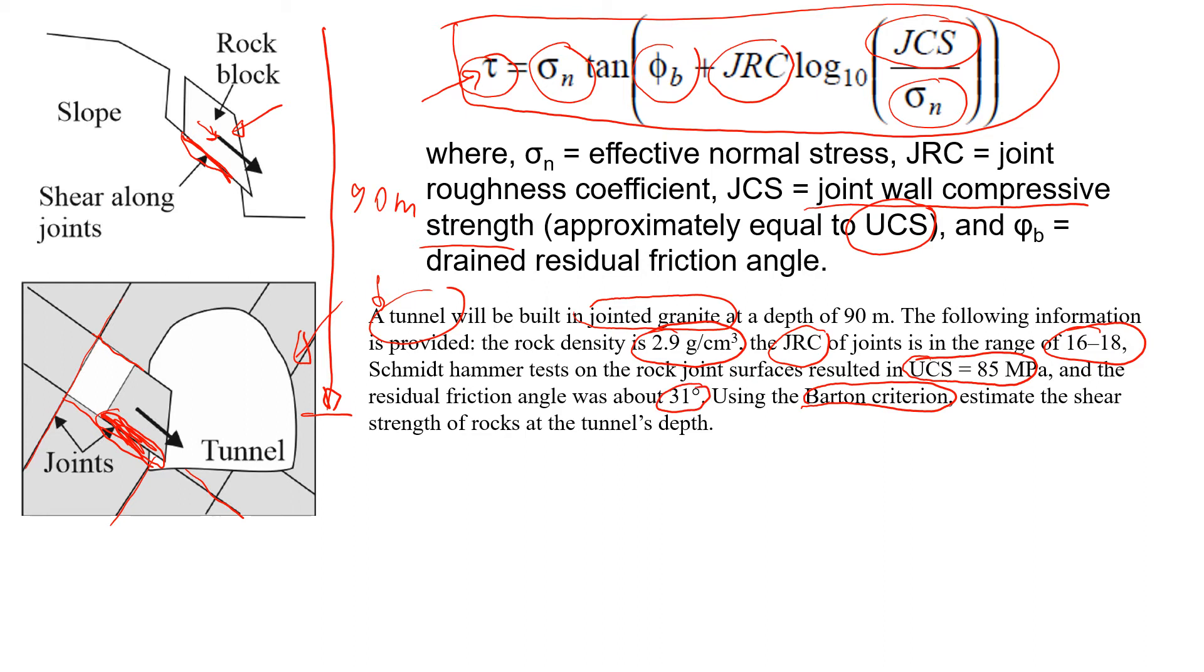So basically we know everything. We know the residual friction angle, we know JRC, we know JCS. The only thing we don't know is the normal stress. And by now you should be able to calculate normal stress without any difficulties. You know that normal stress is unit weight times the depth.